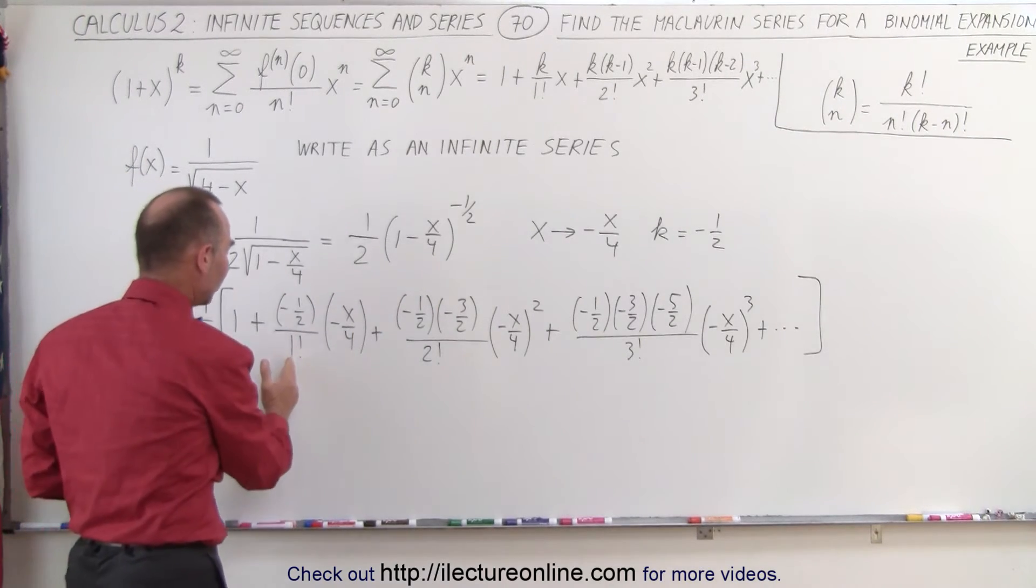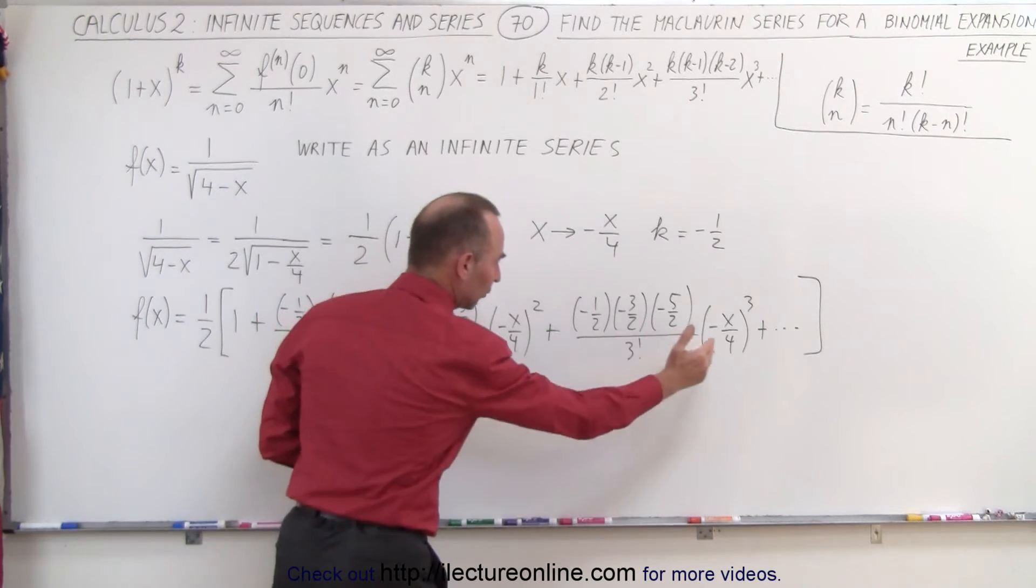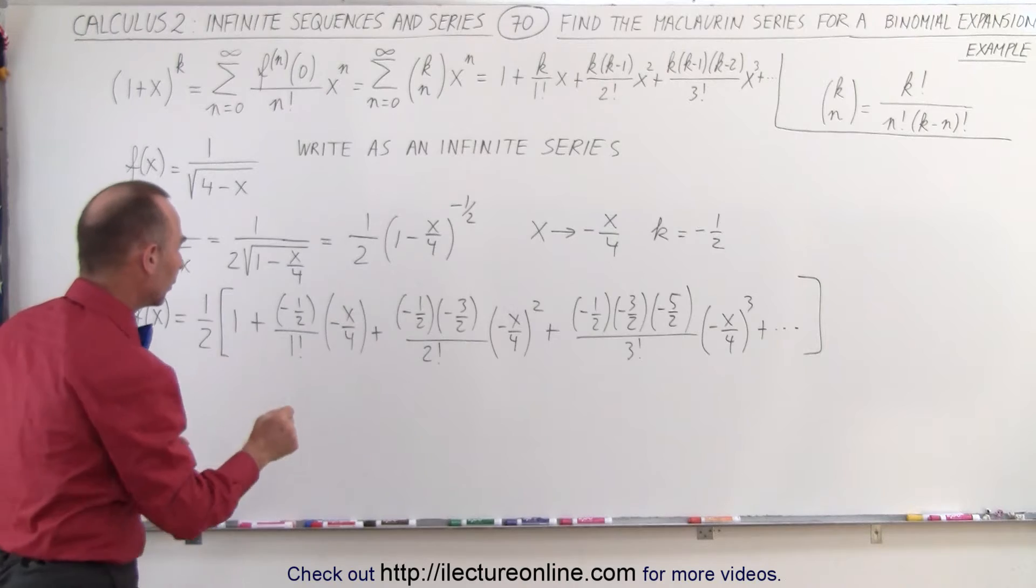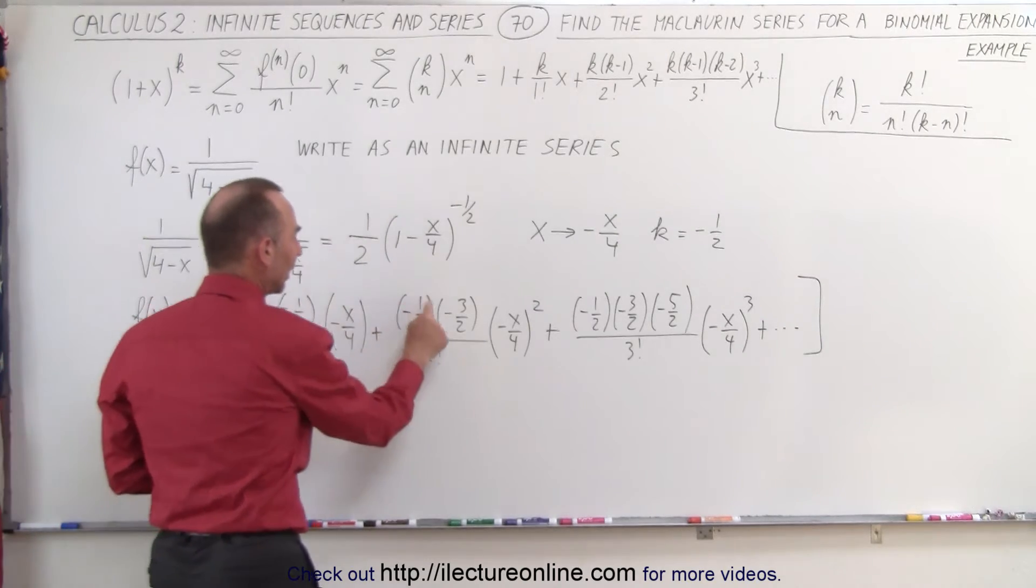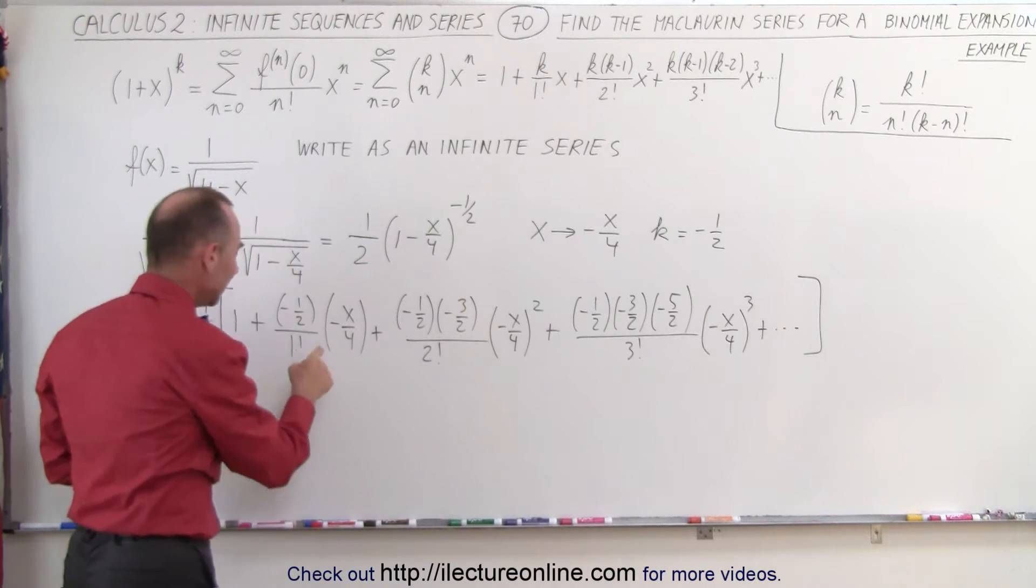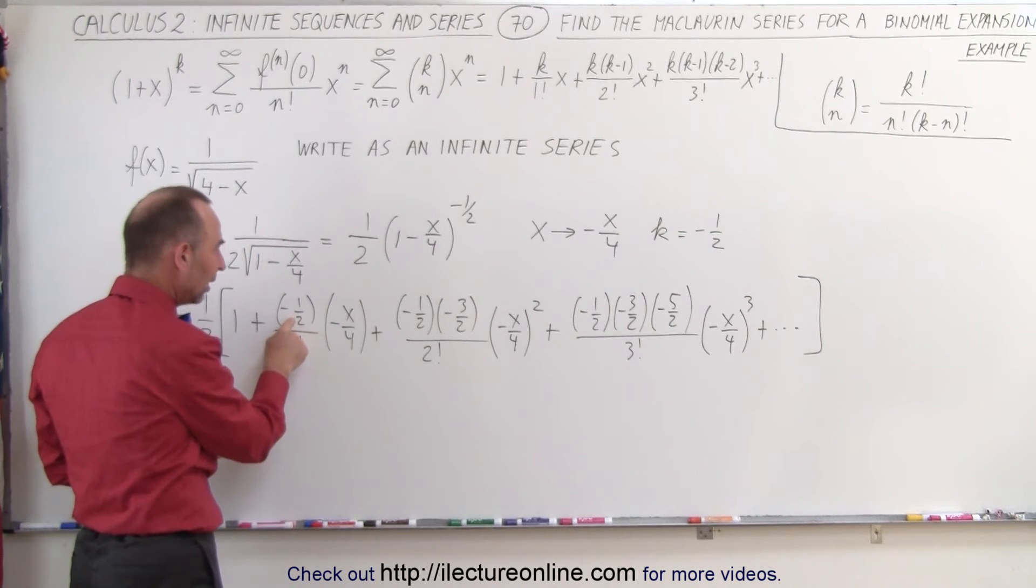Now next we see that we have 1 factorial, 2 factorial, 3 factorial and so forth in the denominator that remains. In the numerator we're going to get a 1, a 1 times 3, a 1 times 3 times 5 and then here we have in the denominator a 2 times 4 which is 8.